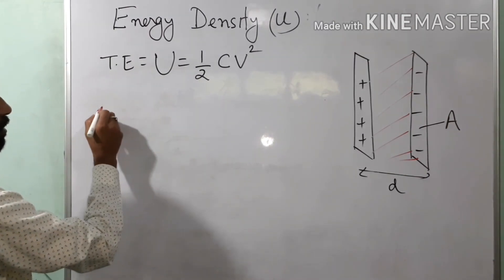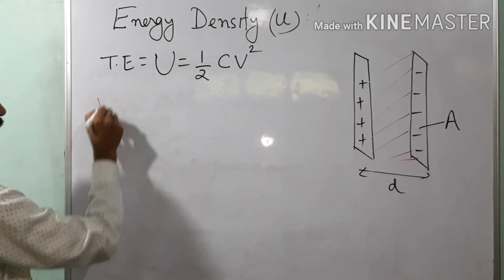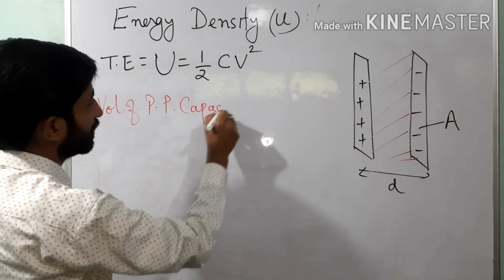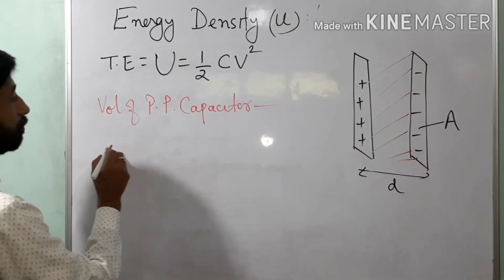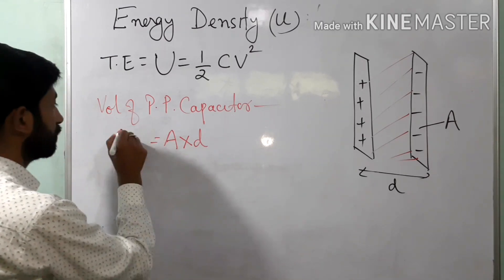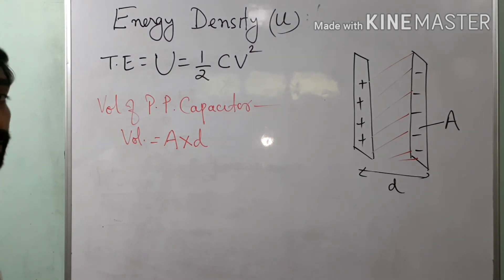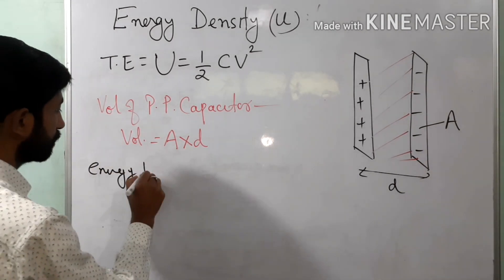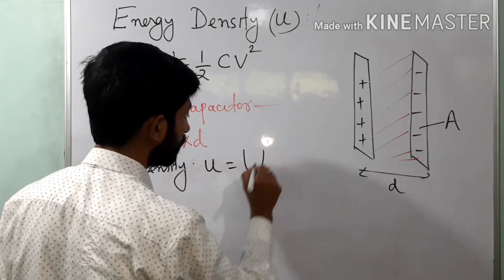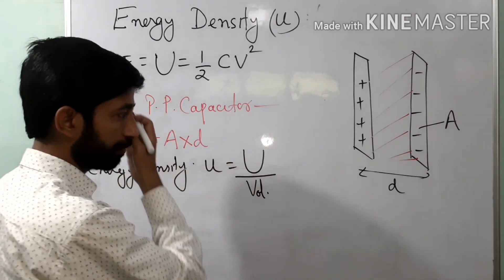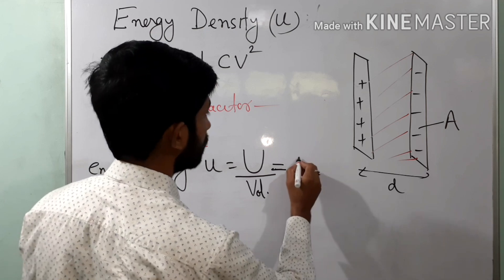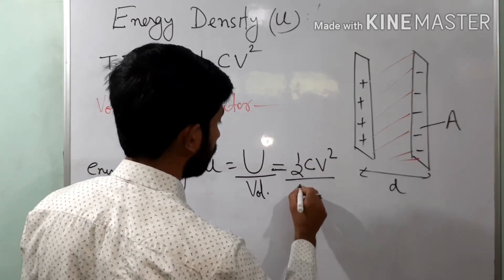The volume of the parallel plate capacitor: the area is A and the separation is D, so the volume is A times D. As per the definition, energy density small u is equal to capital U divided by the volume. We simply put these values — that is half C V squared divided by A times D — and solve.